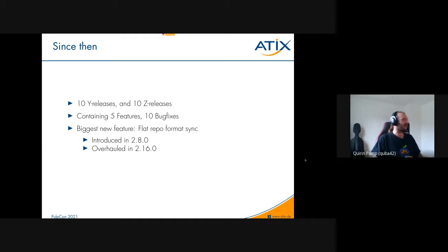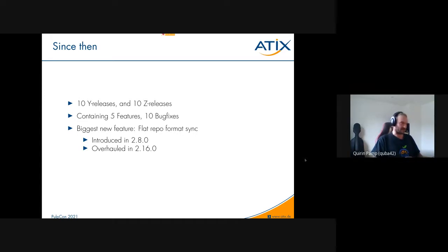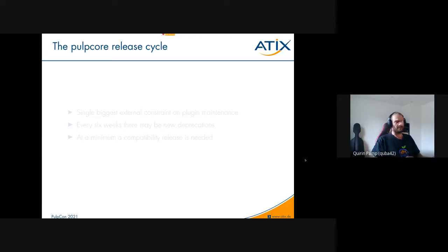That overhaul also fixed some other bugs not related to flat repo sync. There were 20 releases or so in the past year for only about 15 distinct changes — a lot of releases for not that many changes. The reason is the Pulp core release cycle, which brings us right into our first topic relating to plugin maintenance.